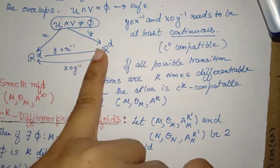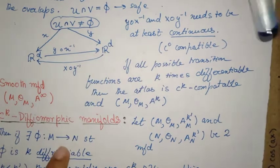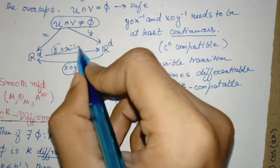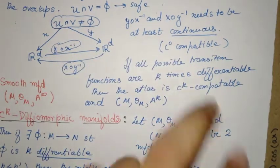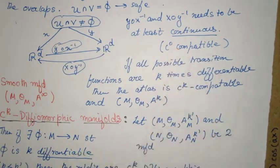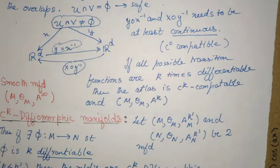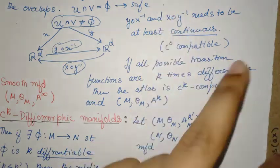If they are empty, then there is no problem. If they are non-empty, the chart transition functions, which are these functions here, the chart transition functions must be C^0 compatible.